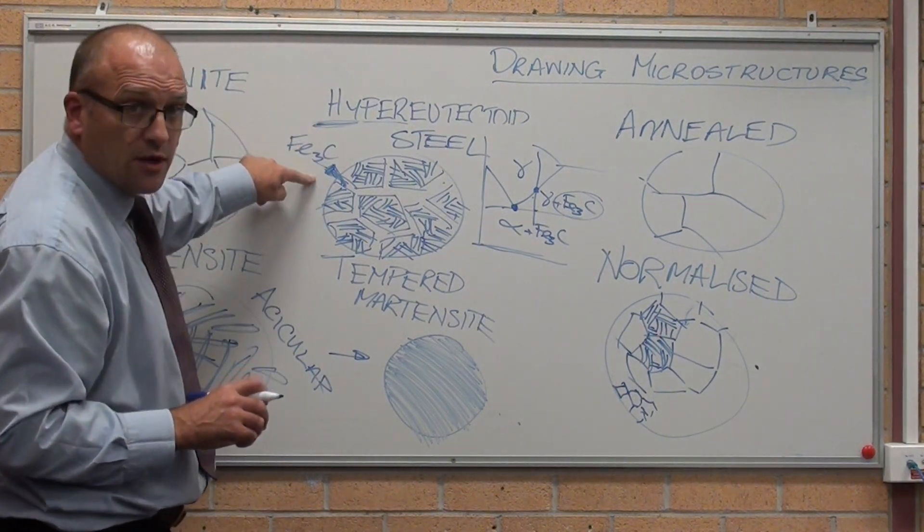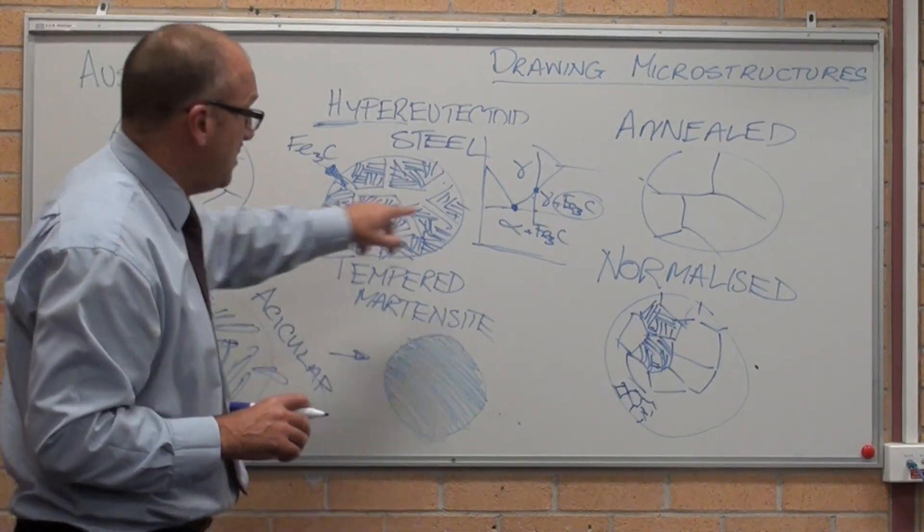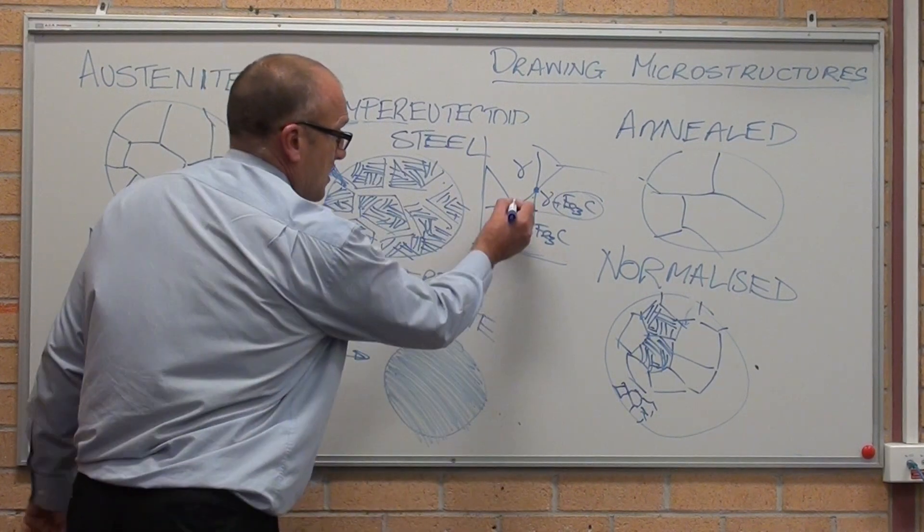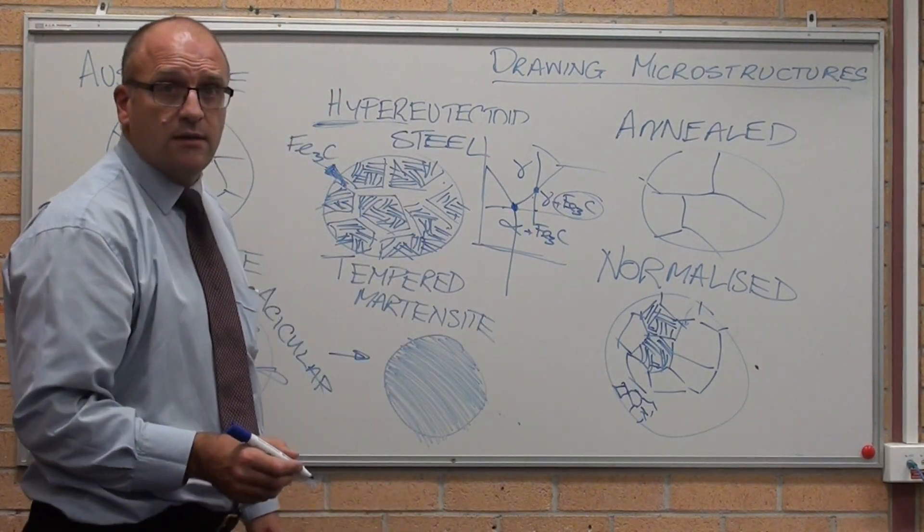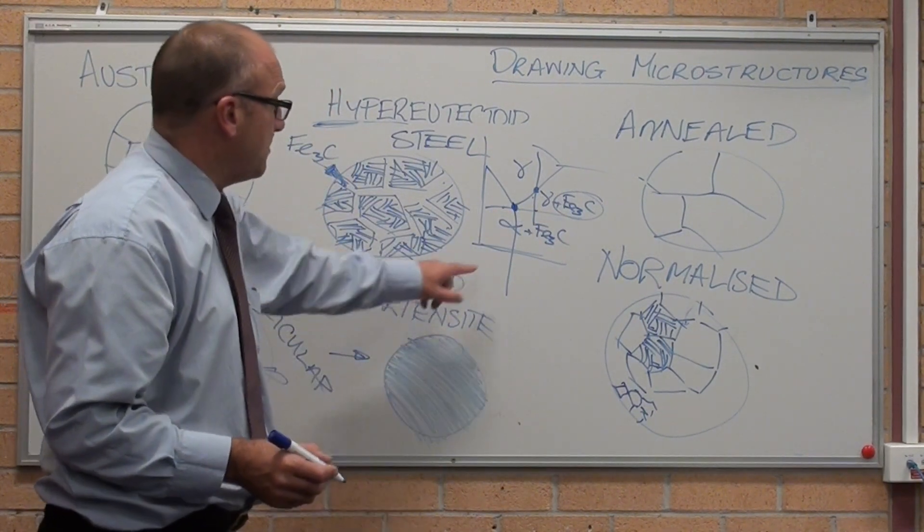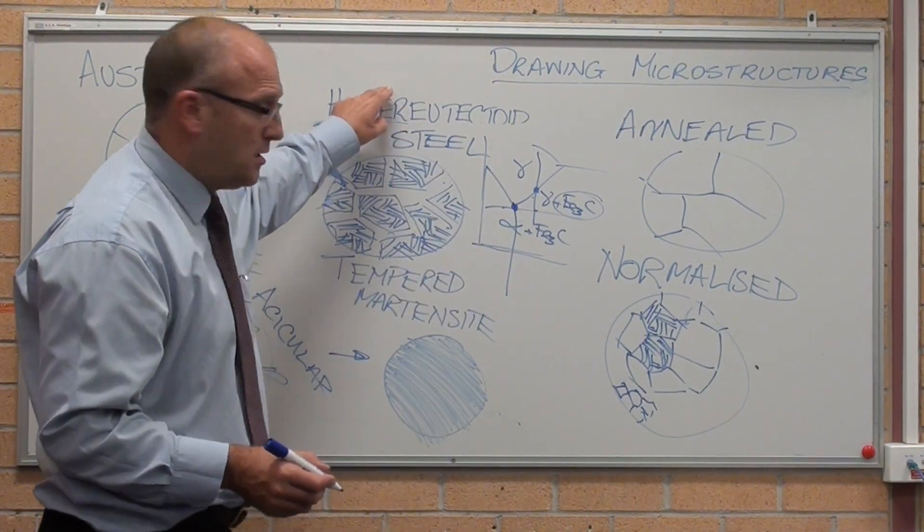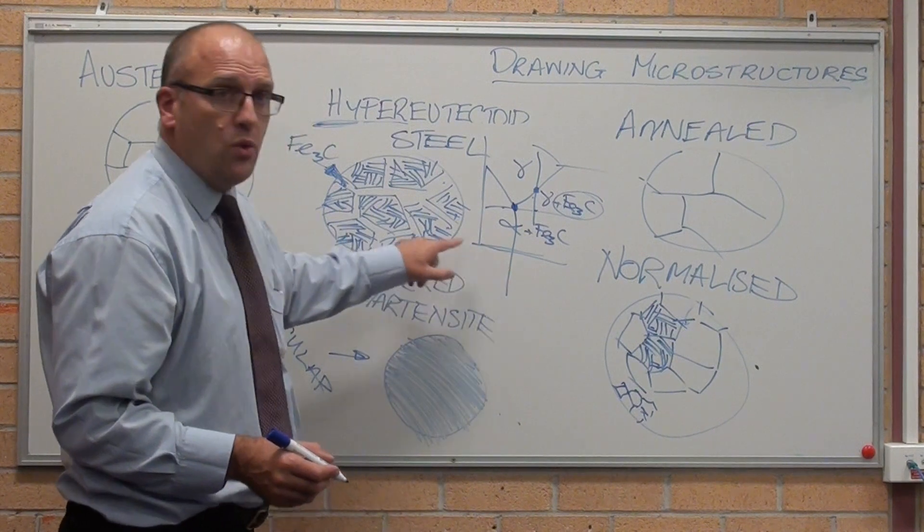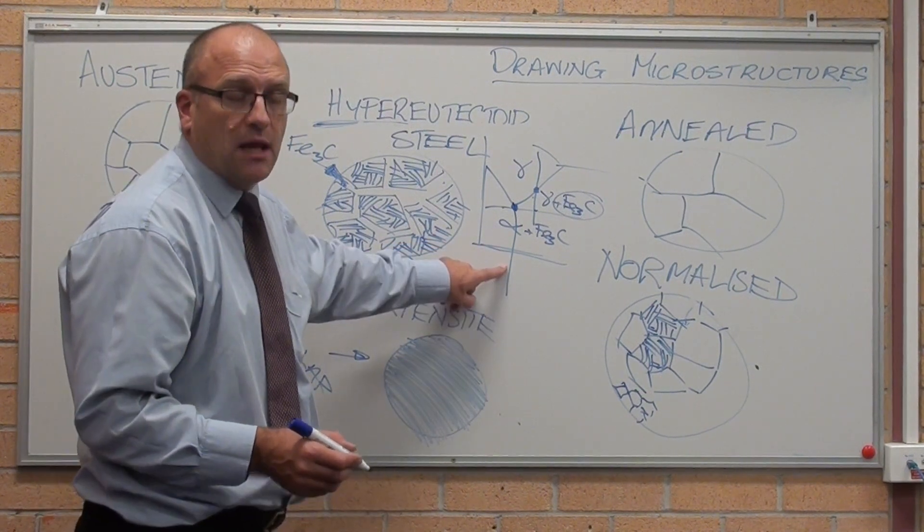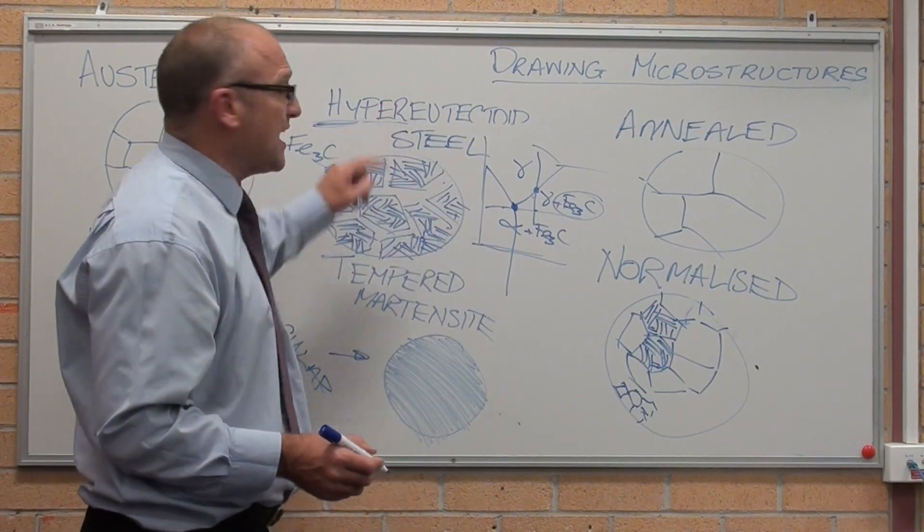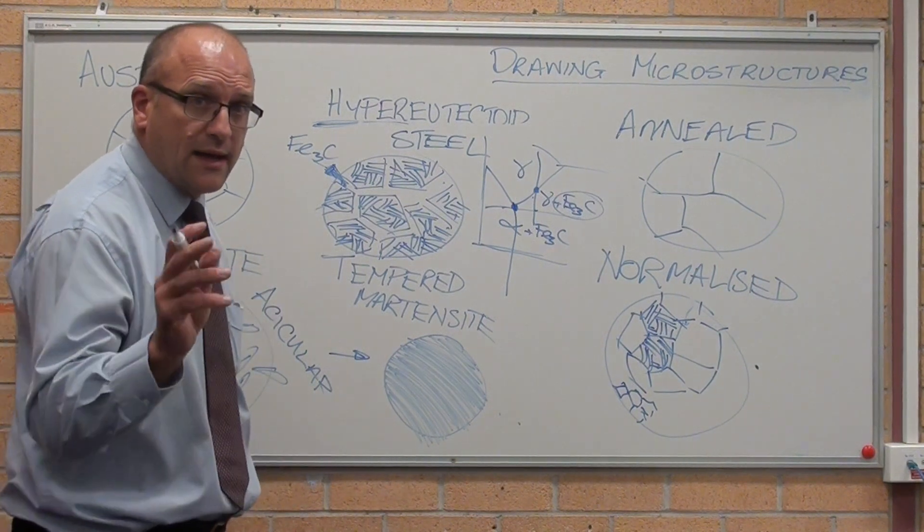Hypereutectoid steel, you've got a network of carbide in there because it's cooled down. There's our eutectoid content at 0.8%. So anything above, hyper, super. Anything below, low, anything below 0.8% carbon is a hypoeutectoid. We're going to deal with that separately.